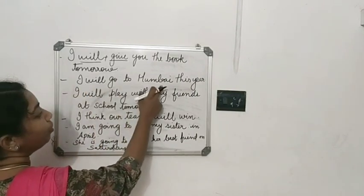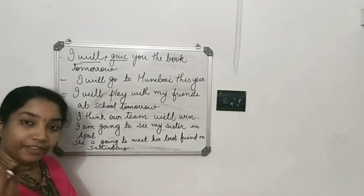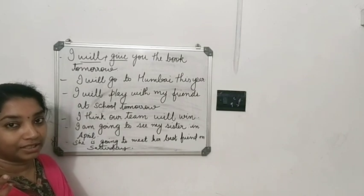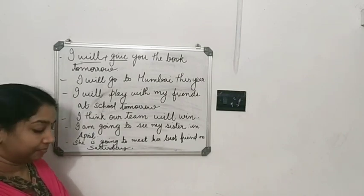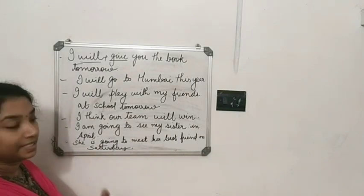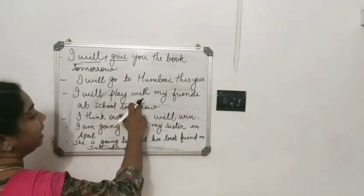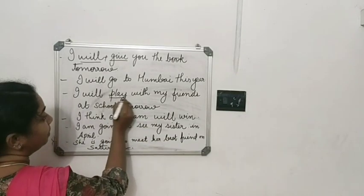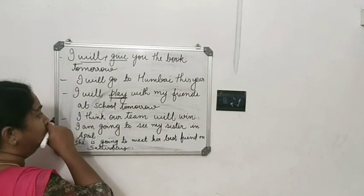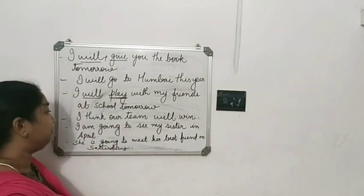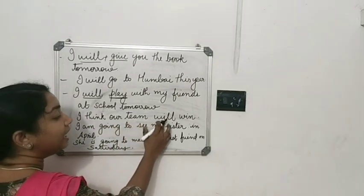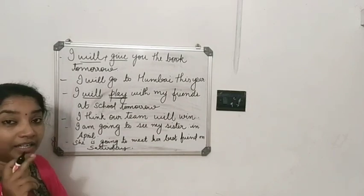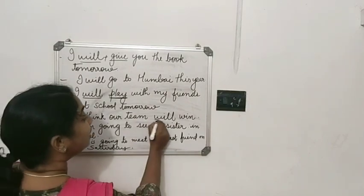I will play with my friends at school tomorrow — will play. I think our team will win — will win. These are all examples of simple future tense using will plus the base form of the verb.